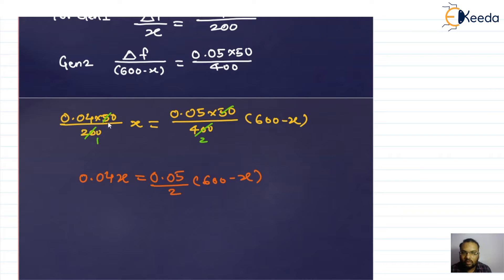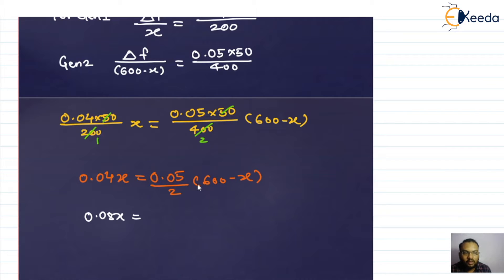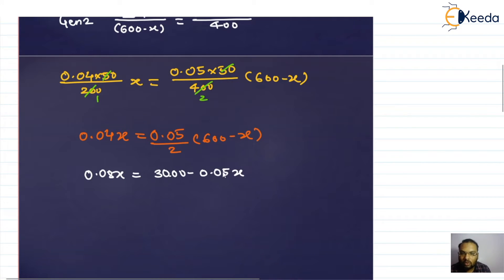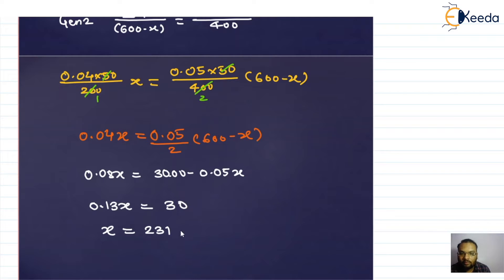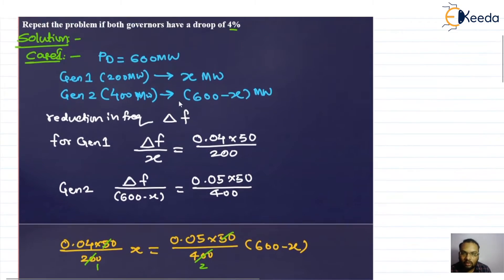Shifting the factor of 2, we get 0.08x = 0.05 × (600 minus x). Expanding: 0.08x = 30 minus 0.05x. Bringing the x terms together: 0.05x + 0.08x = 0.13x = 30. Solving: x = 30 / 0.13 ≈ 231 megawatt.